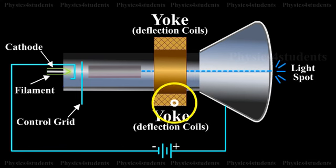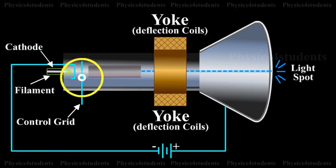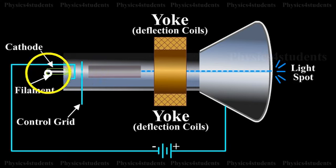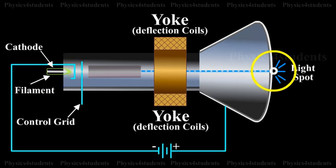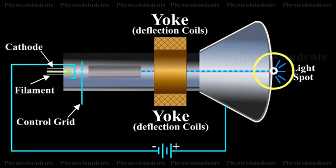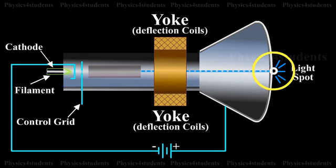The blanking pulses are given to the control grid of the electron gun of the picture tube. The picture signals are applied to the filament of the electron gun of the picture tube. According to the variations of potential in the picture, electrons are emitted from the electron gun. Thus, the intensity of the fluorescent screen of the picture tube is in accordance with the variation of potential in the picture, and the picture is reproduced.